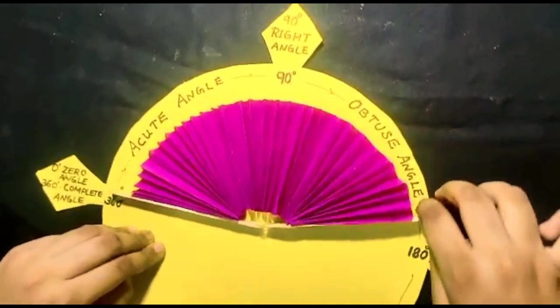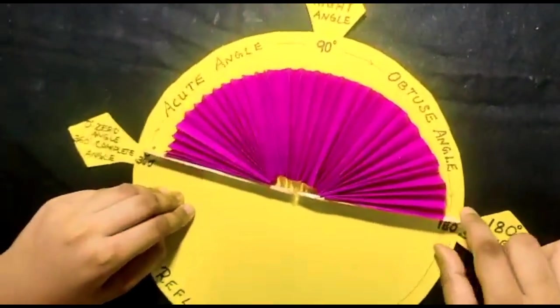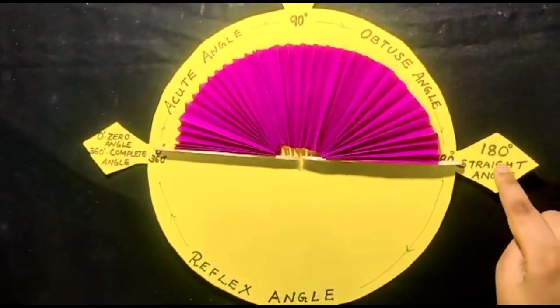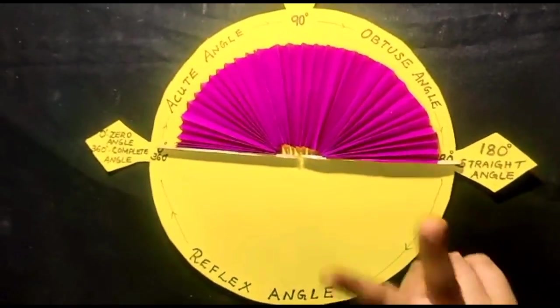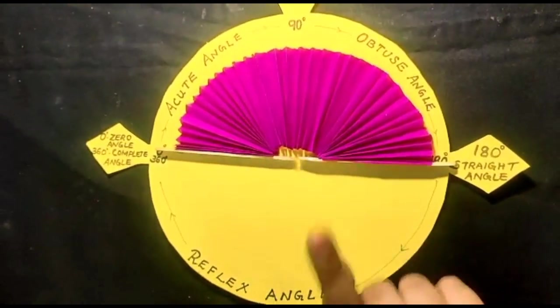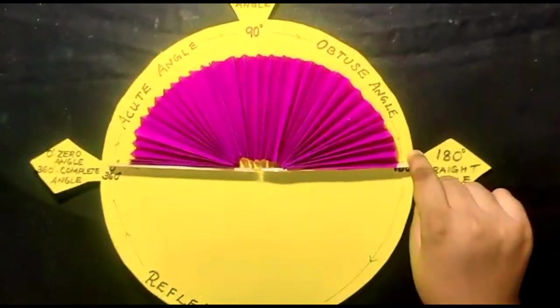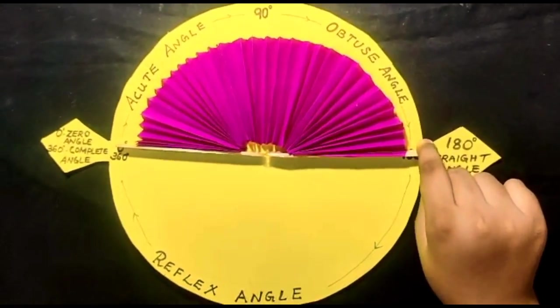When it is at 180 degree, it is straight angle. When it is 180 degree, two arms form a straight line. That is why it is called straight angle.